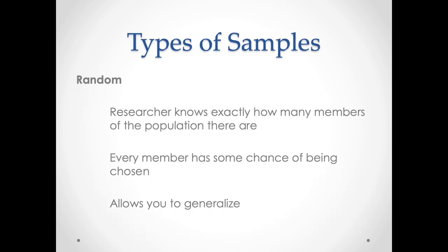One of the primary sampling frames is random samples. Random samples are typically used in quantitative rather than qualitative research. In order for a sample to be a random sample, there has to be a known non-zero probability of selection for every member in the population. This means we know the probability of selection for different groups, and the probability of selection is never zero — there's no group that has a zero probability of selection.